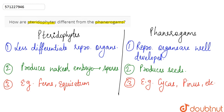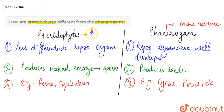Ferns and Equisetum produce spores, whereas phanerogams produce seeds. Phanerogams are more advanced or more developed compared to pteridophytes. Pteridophytes are less advanced compared to phanerogams.